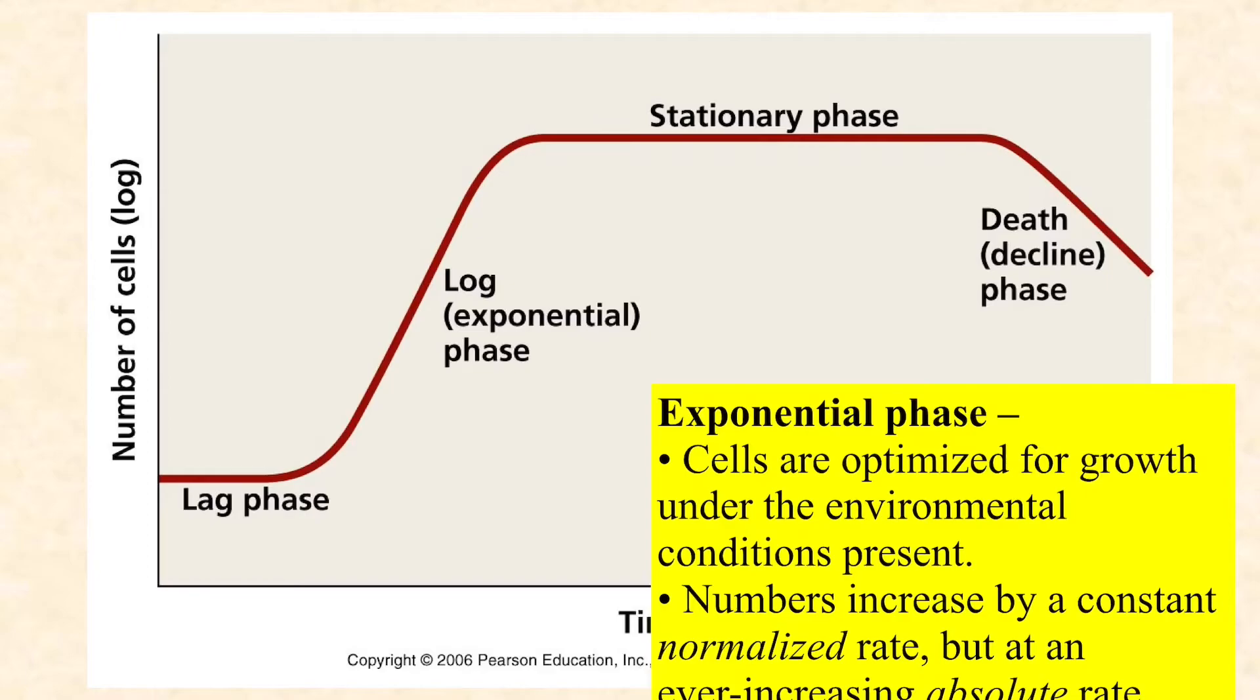But later on in this process, in the same one hour, five million cells became 10 million cells. And so they increased by five million cells in just an hour. So their absolute growth rate is always increasing, getting faster and faster, but their normalized per cell growth rate, in other words, their generation or doubling time is constant and it's as good as it's going to get. It's as fast as it's going to get.